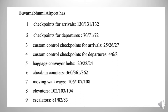Now here is an exercise for you. You have to choose the correct information from your listening. Suvarnabhumi Airport has how many checkpoints for arrivals? The options are 130, 131, or 132. The correct answer is 130 checkpoints for arrivals.